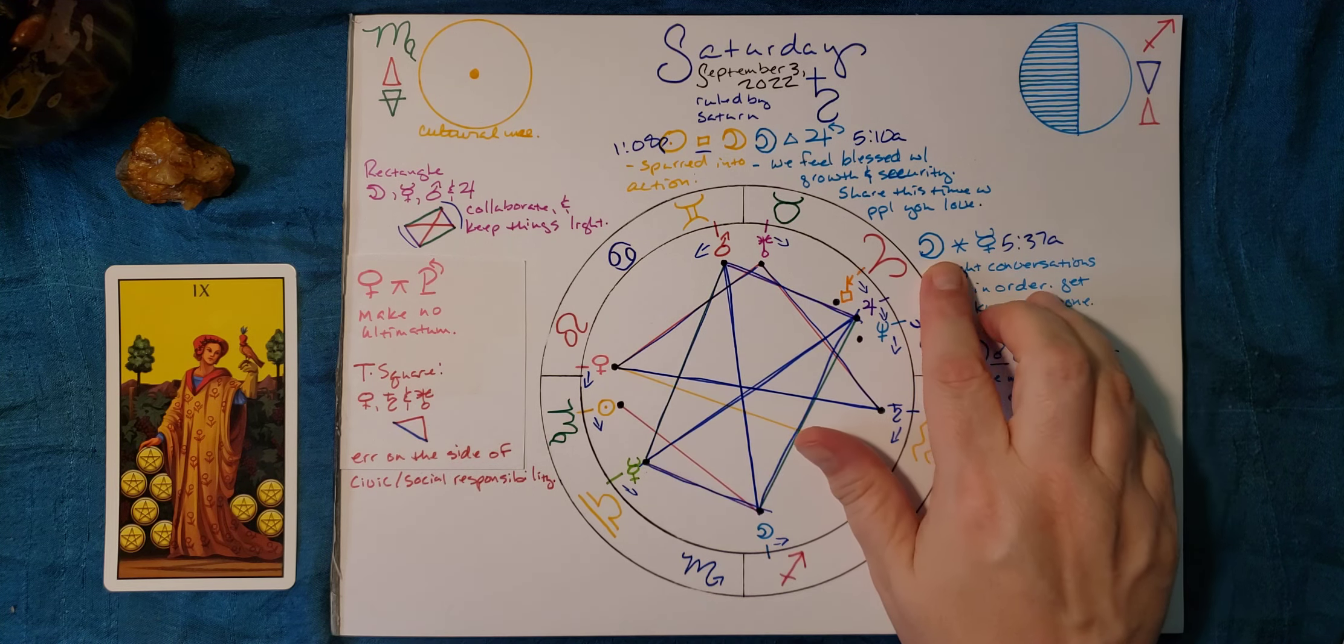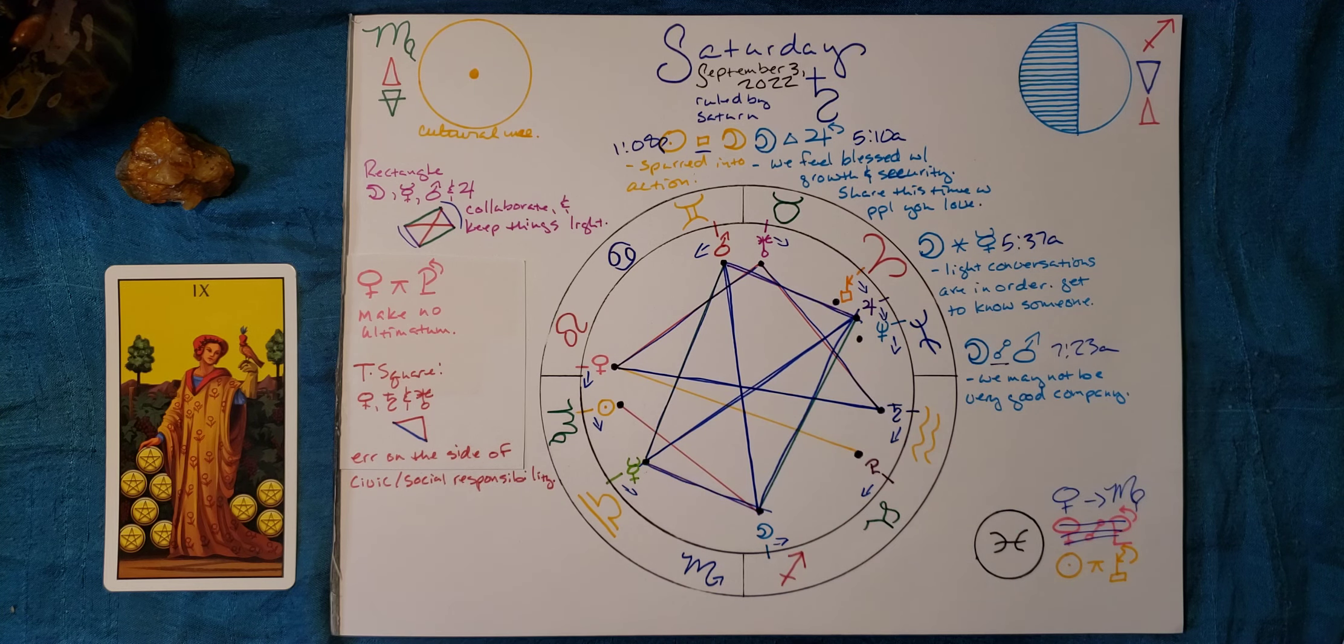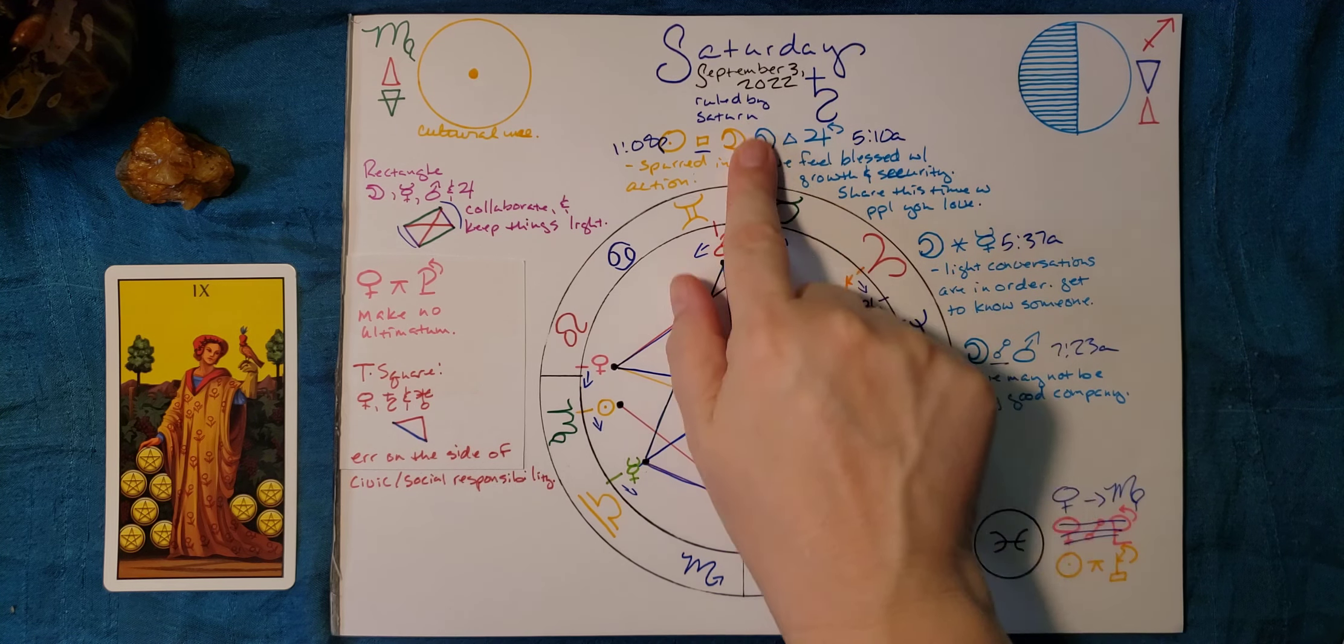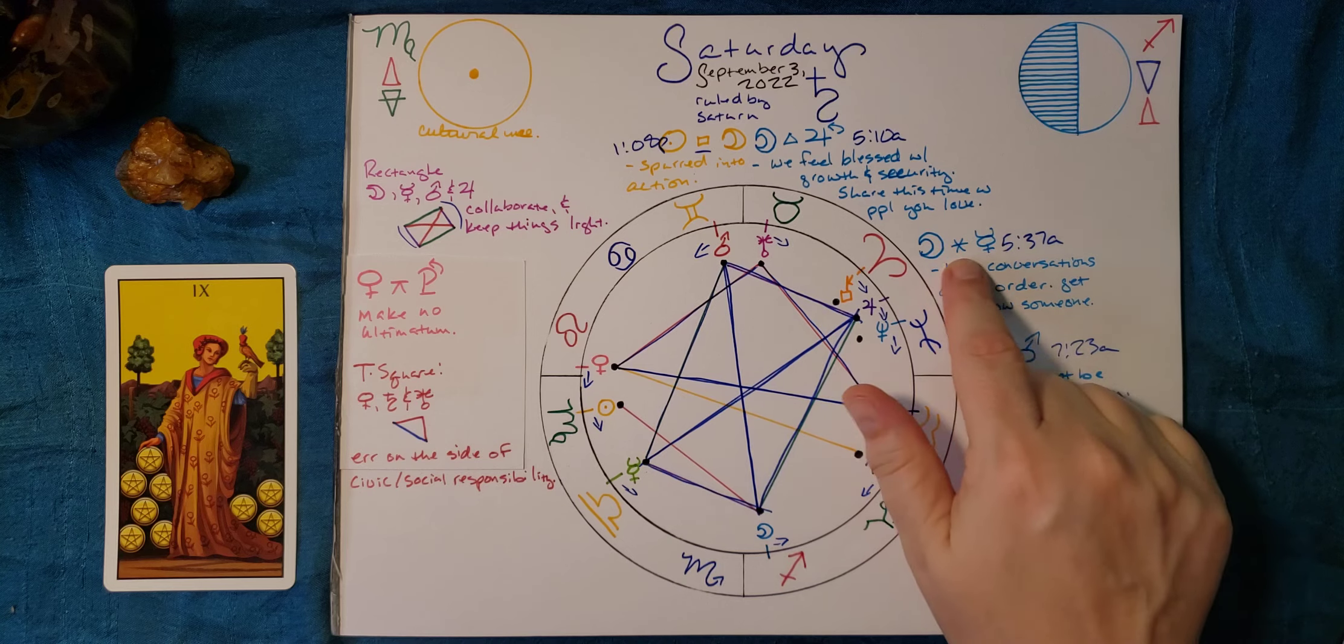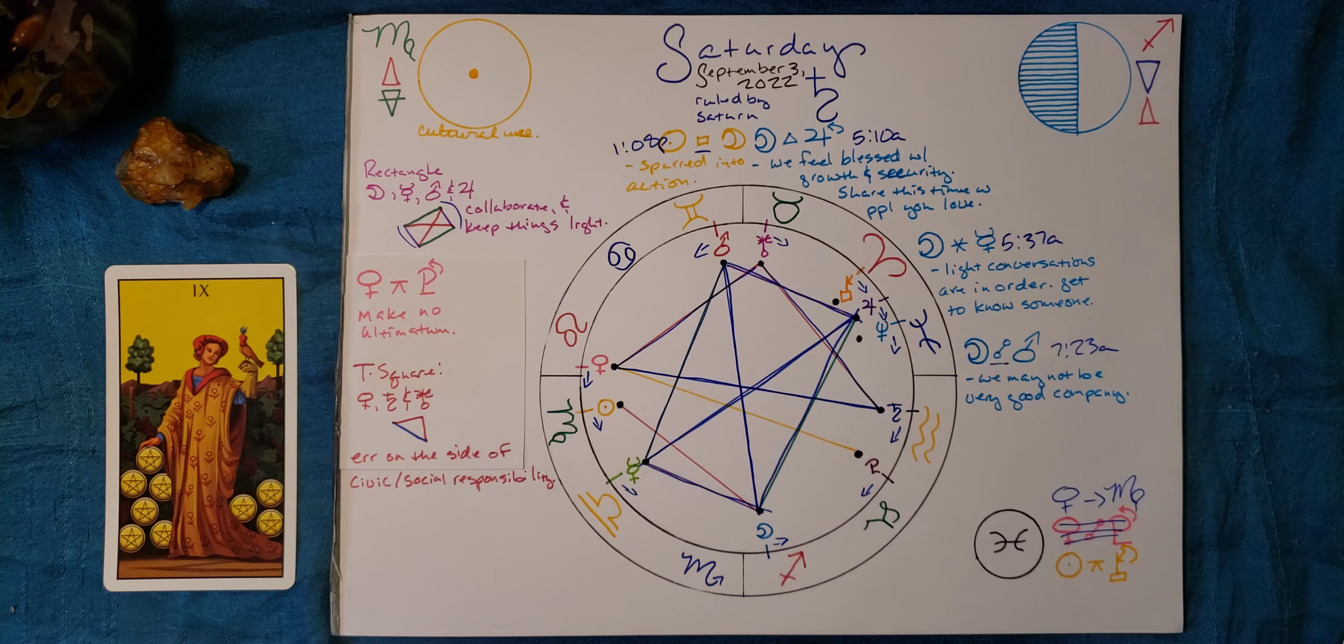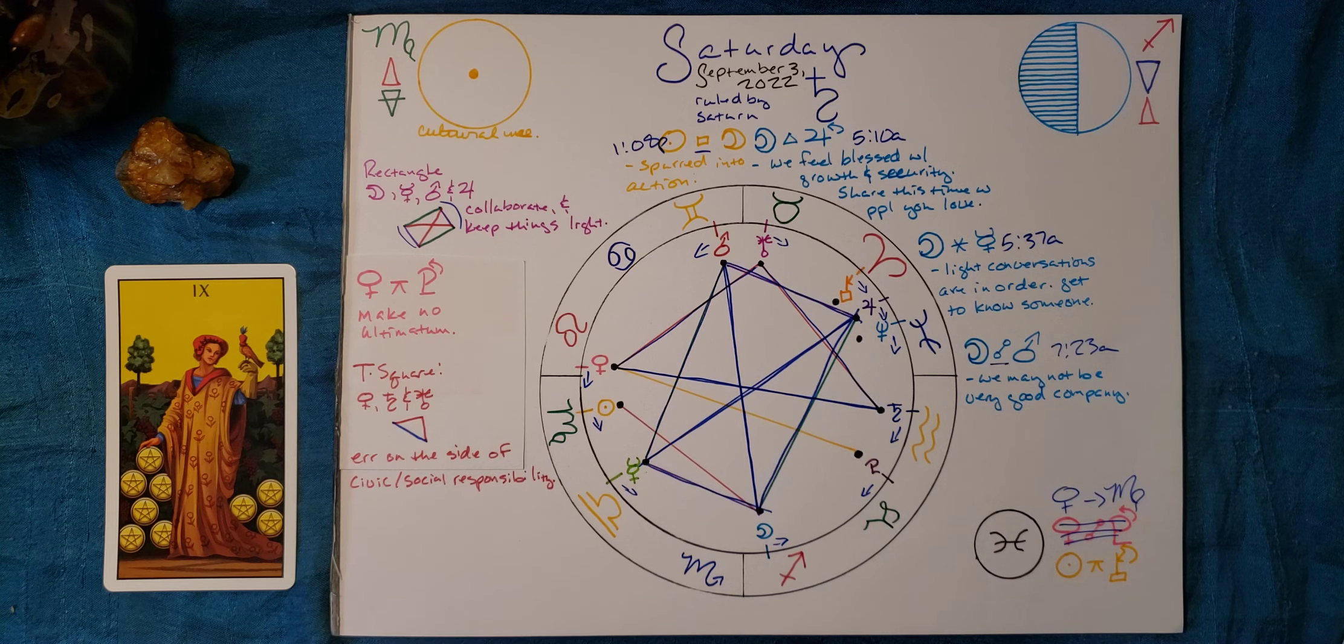And then less than a half an hour later, moon goes sextile to Mercury. So while we're sharing this time with people, we want to keep the conversation light. We want to maybe get to know somebody a little bit better. It's a very cooperative vibe, but it's not a serious talk vibe. It's more like, let's have conversations that move us forward and keep us feeling motivated.